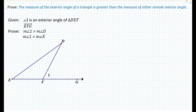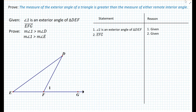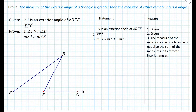We want to prove that the measure of the exterior angle of a triangle is greater than the measure of either remote interior angle. We're given that angle 1 is an exterior angle of triangle DEF and that EFG is a ray — so it's straight at point F. We want to prove that the measure of angle 1 is greater than the measure of angle D and greater than the measure of angle E. Setting up a statement-reason table: our givens are that angle 1 is an exterior angle of triangle DEF and ray EFG. Then, the measure of angle 1 equals the measure of angle D plus the measure of angle E, because the exterior angle equals the sum of the remote interior angles.